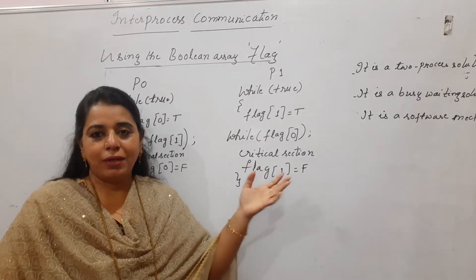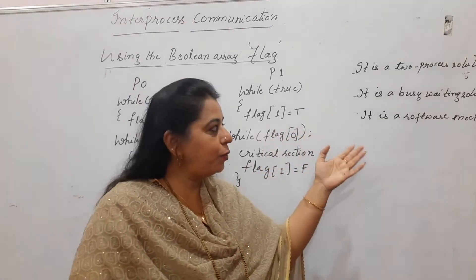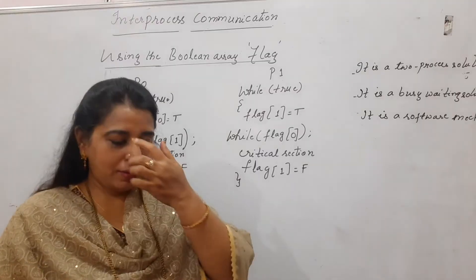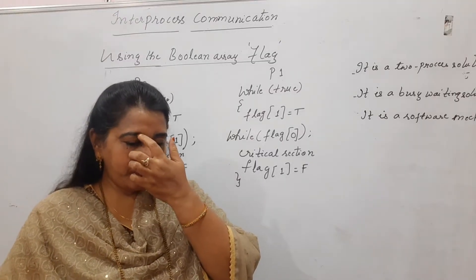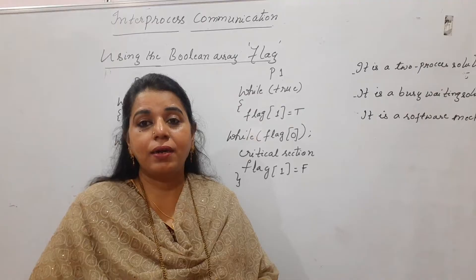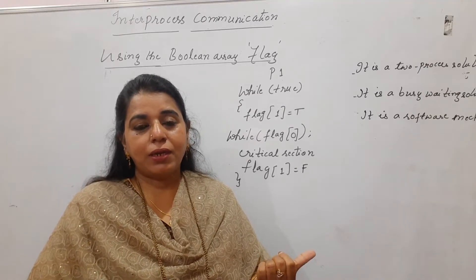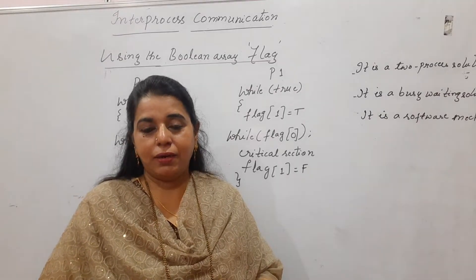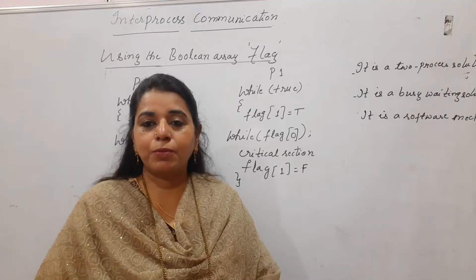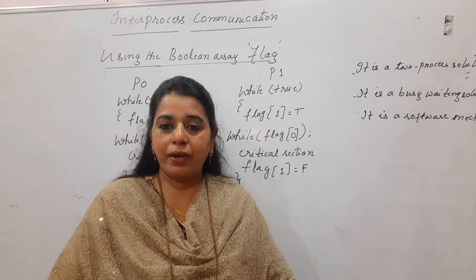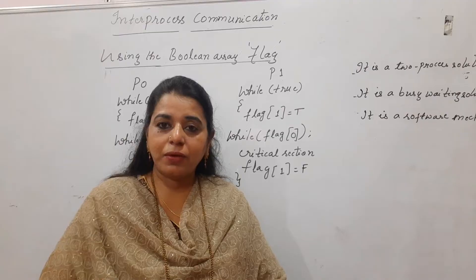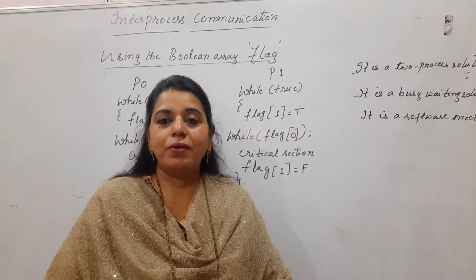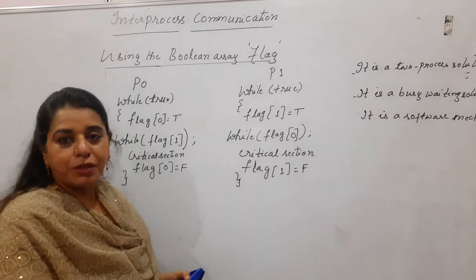This solution is only for two processes. Its features: it is a two-process solution, it is a busy waiting solution, and it is a software mechanism. In my previous session I explained a solution using the turn variable, and the conclusion was it suffers from strict alternation. We need to see here whether strict alternation can be avoided, and whether mutual exclusion, progress, and bounded wait are satisfied.